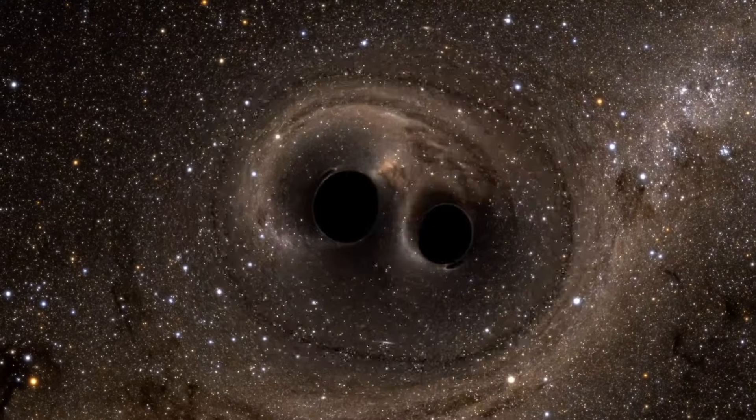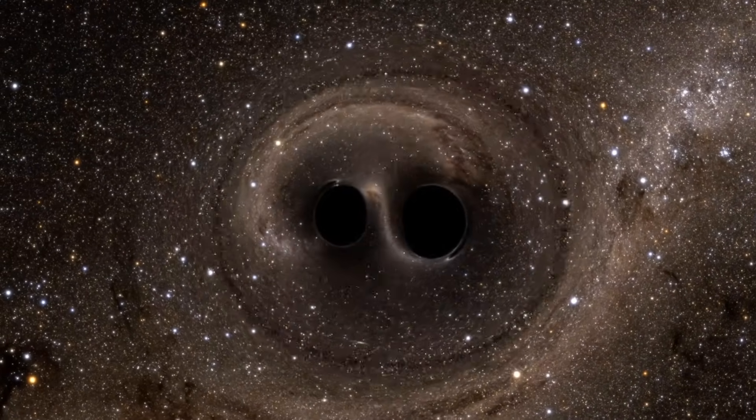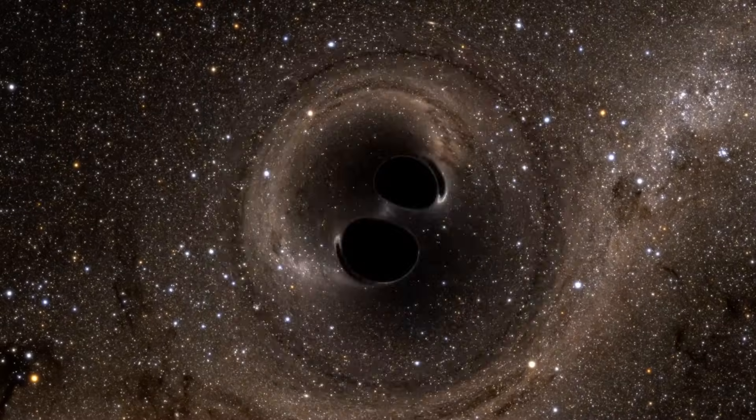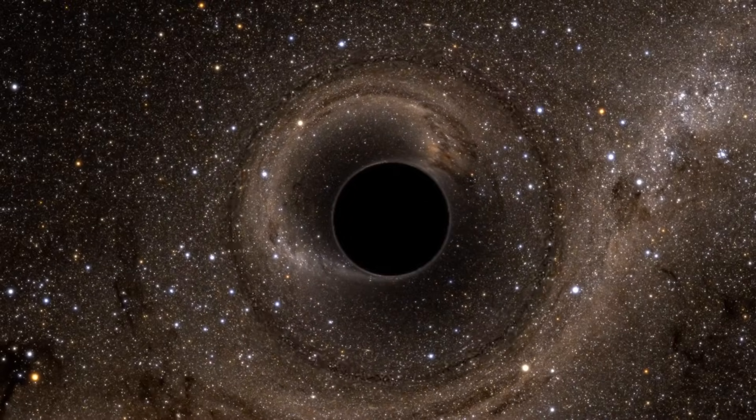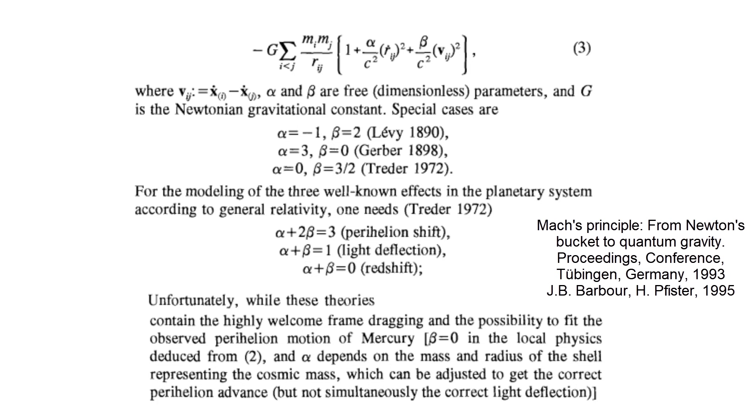The non-linearity of gravity does not only become evident in special cases such as black hole merging and emission of gravitational waves. One can tweak a linear approximation to general relativity to fit the anomalous motion of the perihelion advance of Mercury and get the observed arcs per second. But by doing this, one does not get light deflection and redshift correctly.